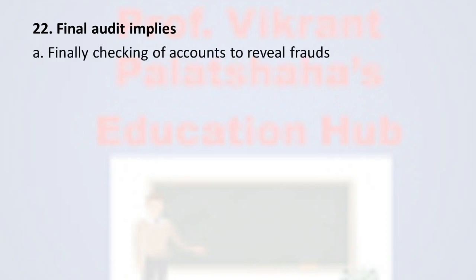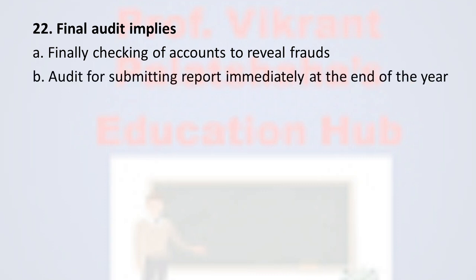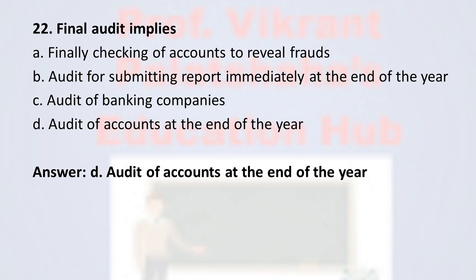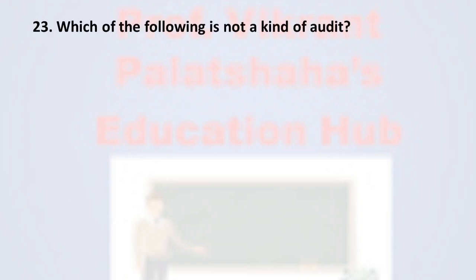Question number twenty-two: final audit implies — option A finally checking of accounts to reveal frauds, option B audit for submitting report immediately at the end of the year, option C audit of banking companies, and option D audit of accounts at the end of the year. The correct option is option D — audit of accounts at the end of the current year is called a final audit.